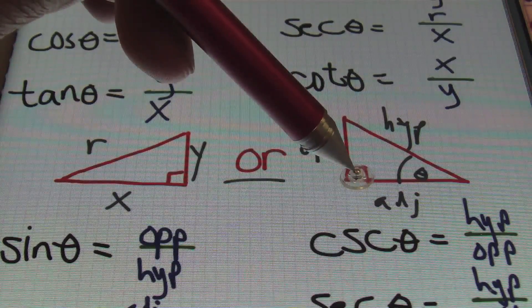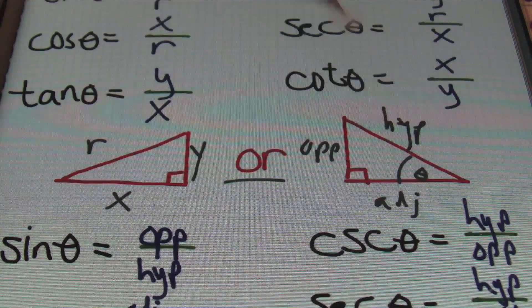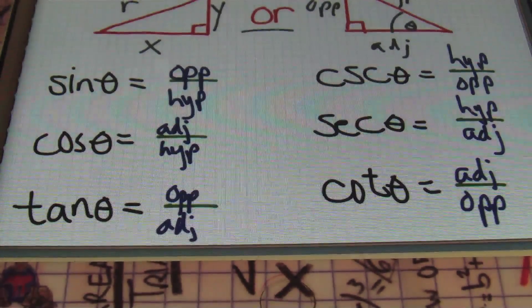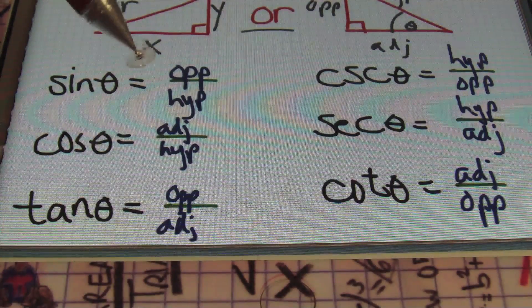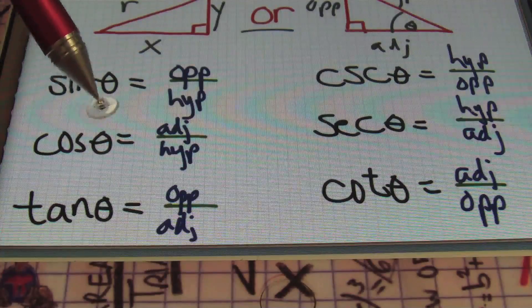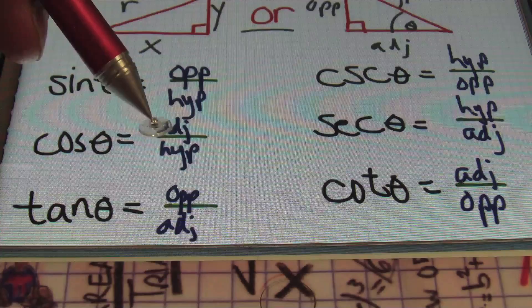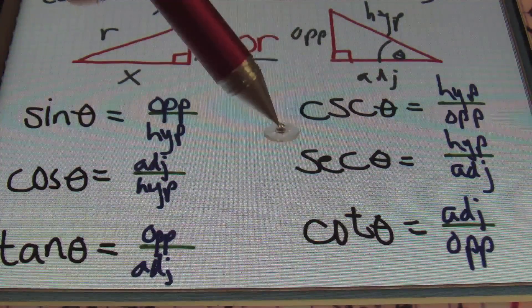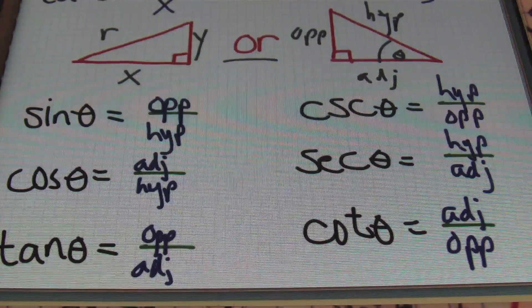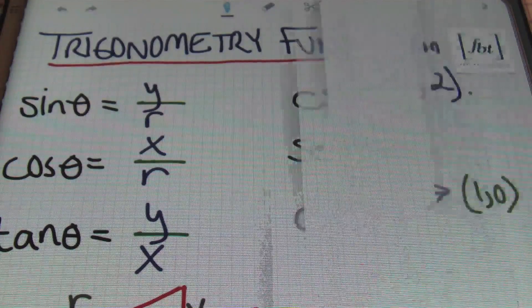Then over here you'll have the adjacent side — that ADJ — and of course, opposite that right angle, we have the hypotenuse again. Some people learn it in that way, whereas the sides are labeled as opposite, hypotenuse, and adjacent. Sine theta would be opposite over the hypotenuse, cosine theta is the adjacent over hypotenuse, tangent theta is equal to the opposite over the adjacent, and then of course you have the reciprocals again: cosecant theta, secant theta, and cotangent theta.